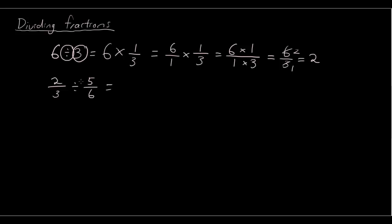Similarly, we can change the divide sign into times, so we can write 2/3 times, and then we flip the second fraction that we're dividing by upside down to give us 6/5.